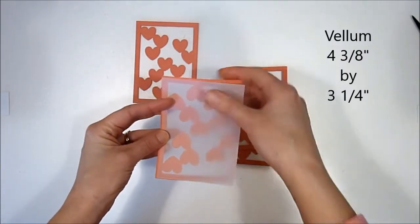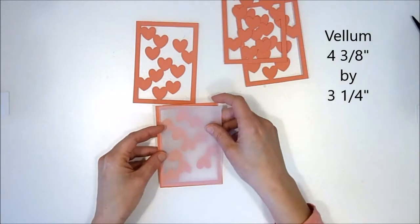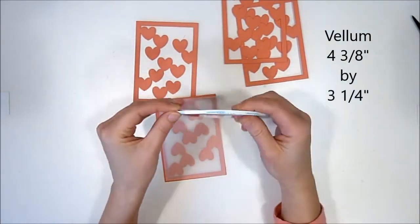I've trimmed some vellum down just the right size to fit behind each panel, which is about four and three-eighths of an inch by three and a quarters.